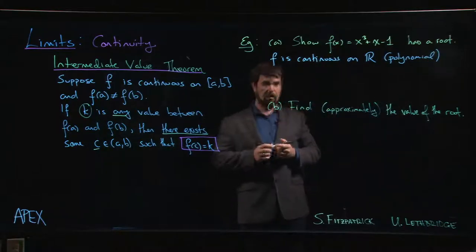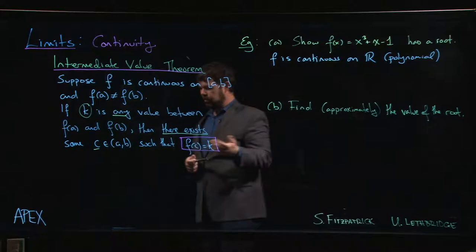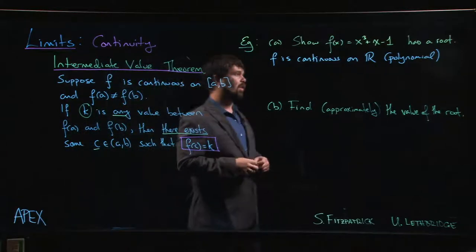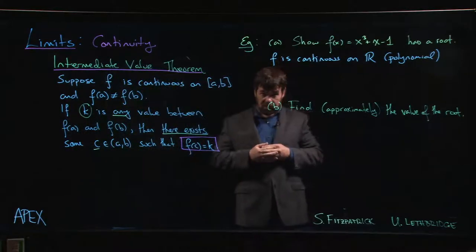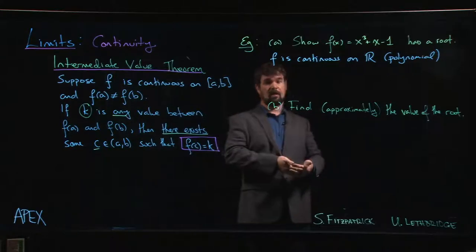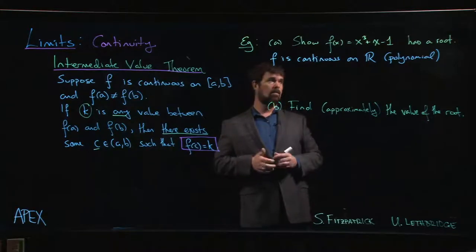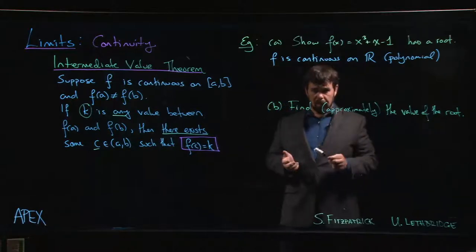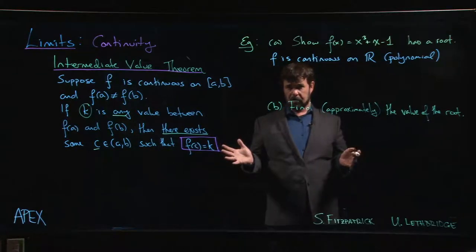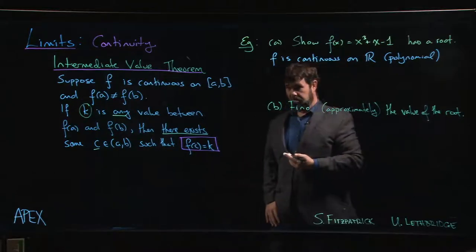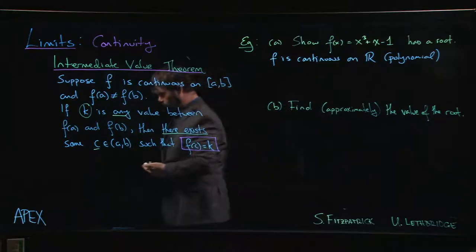We also know that the next step is we want to show it has a root, we want to show it has a zero. We want zero to be between f of A and f of B. So we've got to find one value of f where f of x is negative or one value of x where f of x is negative, another x value where f of x is positive. Now you can probably find those by trial and error. You can certainly convince yourself that they must exist because we know from looking at long-term behavior of polynomial functions that this cubic term is going to dominate for values of x that are large in absolute value.